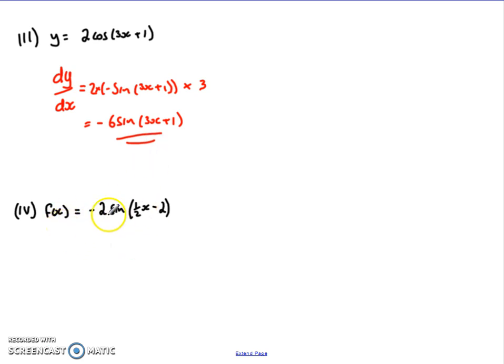Fourth question here was minus 2 sine of 1 half x minus 2. Again, same set of steps. f dashed x in this case, coefficient in front. Derivative of this, and the derivative of sine is cos, so it's negative 2 times cos of 1 half x minus 2. And then it's multiplied by the derivative in here.